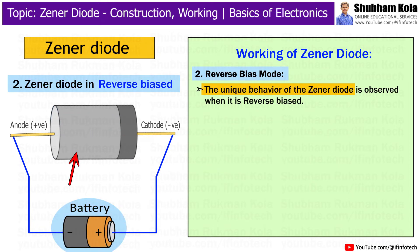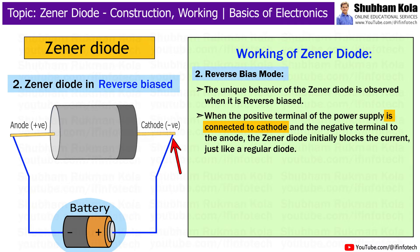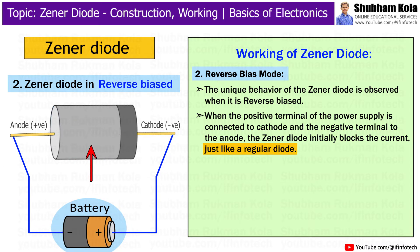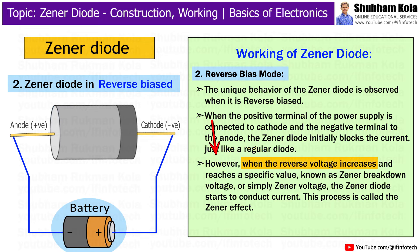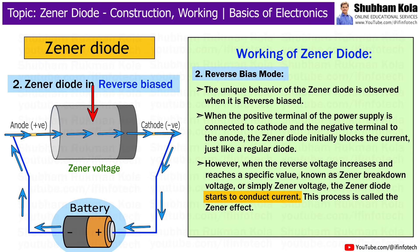The unique behavior of the Zener diode is observed when it is reverse biased. When the positive terminal of the power supply is connected to the cathode and the negative terminal to the anode, the Zener diode initially blocks the current, just like a regular diode. However, when the reverse voltage increases and reaches a specific value known as the Zener breakdown voltage, or simply Zener voltage, the Zener diode starts to conduct current.